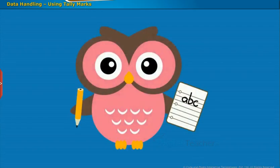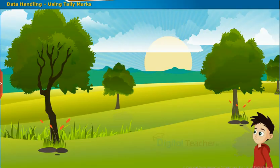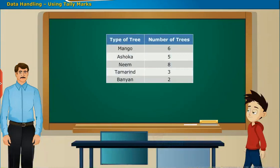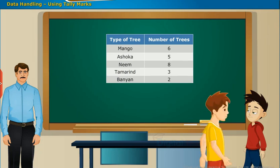In this section, we are going to learn how to record data. Suppose a boy collected data of different types of trees he found while going to school. He prepared a table of the number of trees and showed it to his teacher. His teacher asked him to represent the number of trees with a tally mark, but he didn't know how to represent it. Then one of his classmates drew the notations as shown on screen.